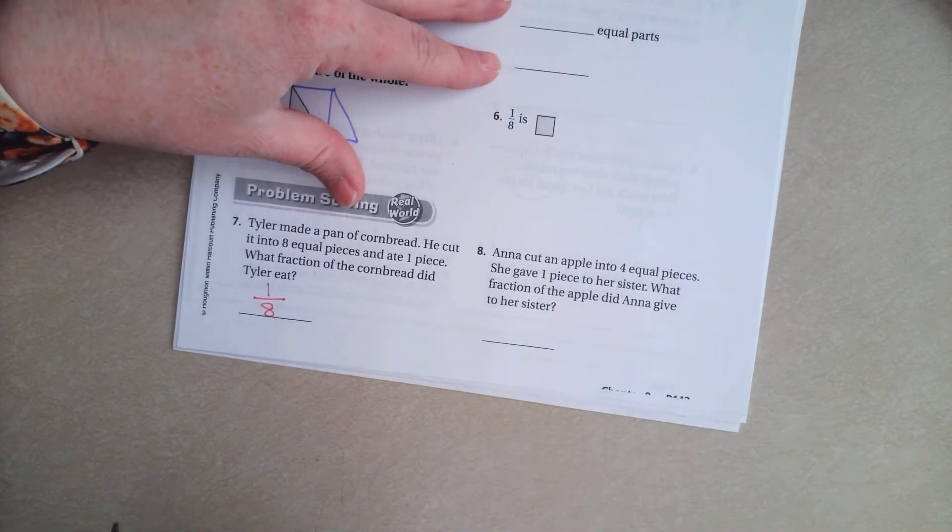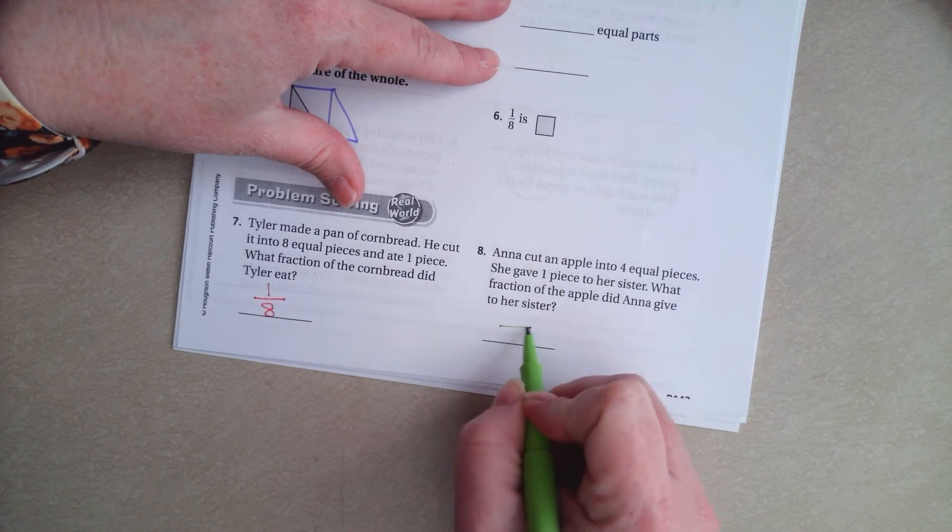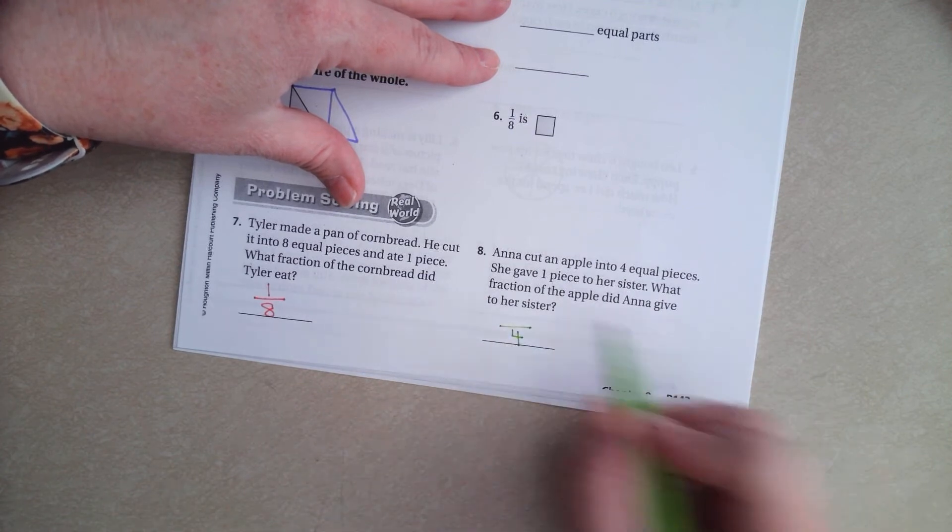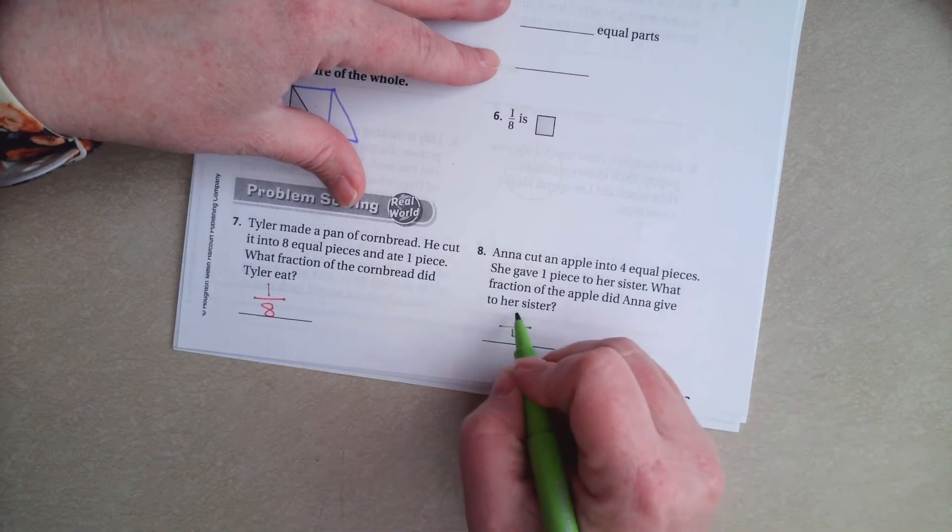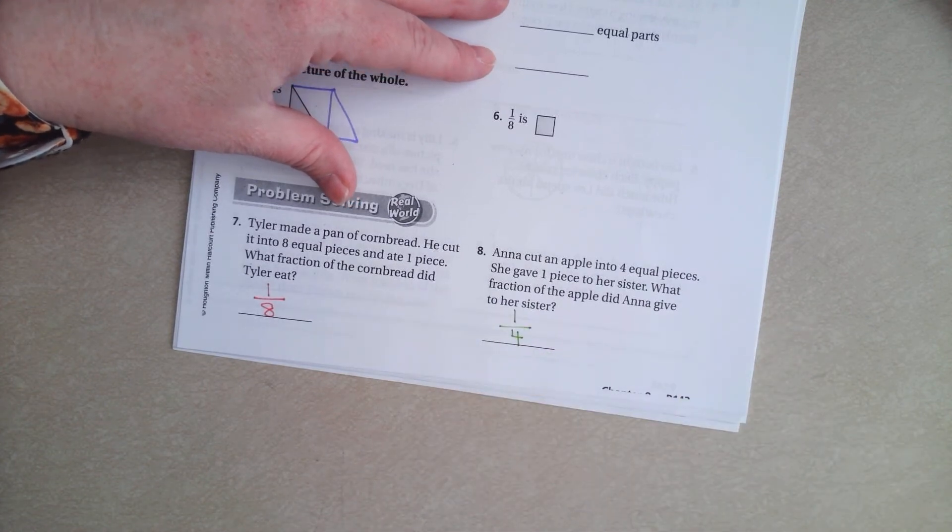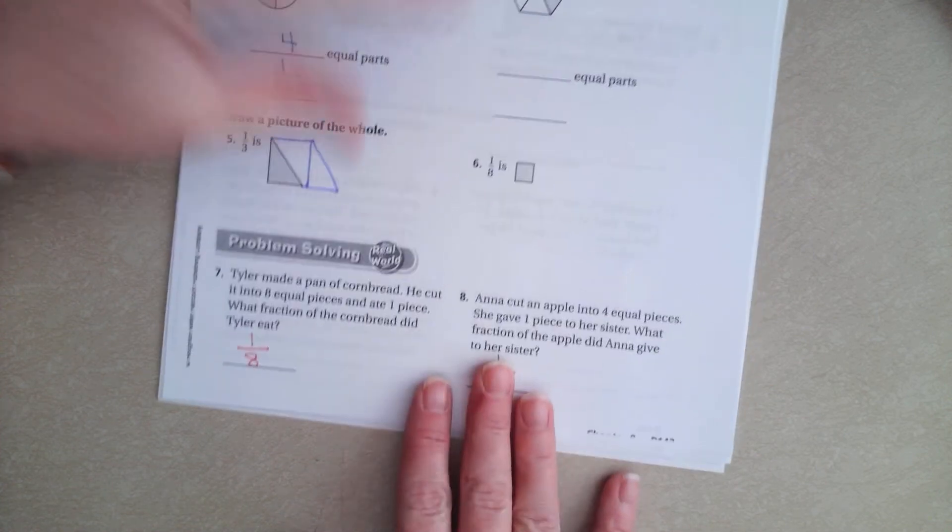Anna cut an apple into four equal pieces. How many pieces? Four. She gave one piece to her sister. What fraction did she give to her sister? One-fourth. Really is that easy, guys.